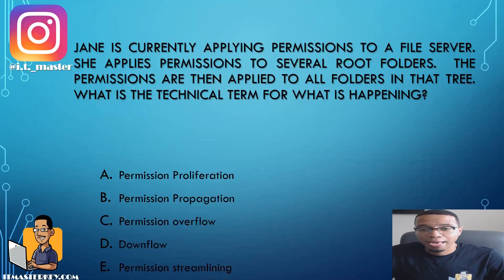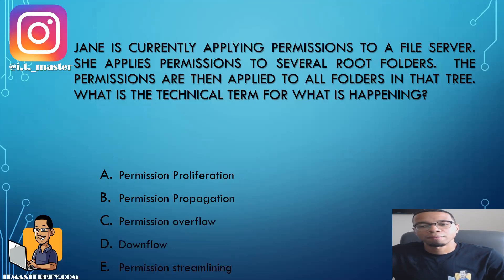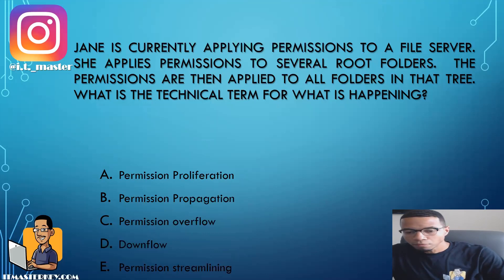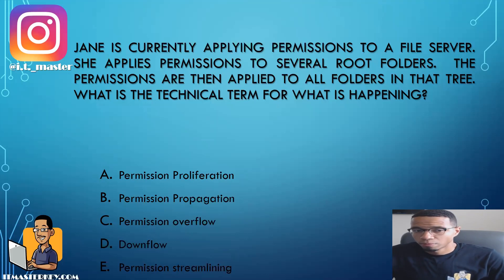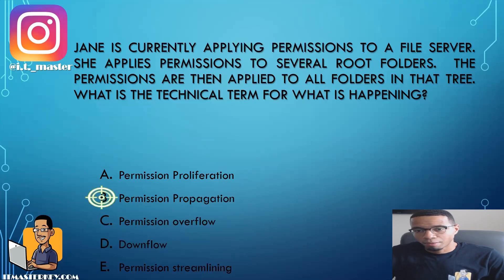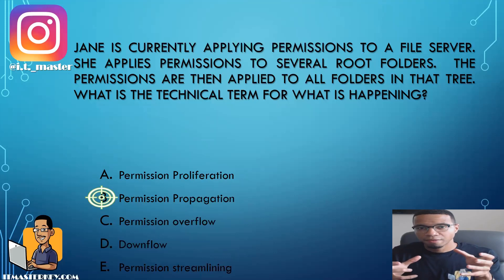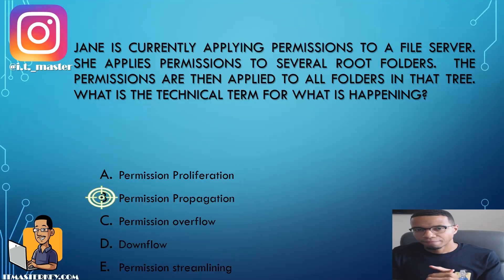Jane is currently applying permissions to a file server. She applies permissions to several root folders, and the permissions are then applied to all folders in that tree. What is the technical term for what is happening? The technical term is permission propagation — whatever permissions you set on the root or main folder get applied to all the folders within it.